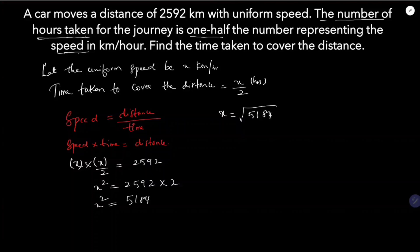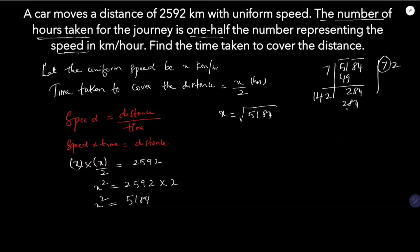You can find the square root using prime factorization or the division method. Using the division method on 5184: taking two digits from the right, 7 times 7 is 49. Then 142 times 2 is 284. So the square root of 5184 is 72. Therefore speed is 72 km per hour.